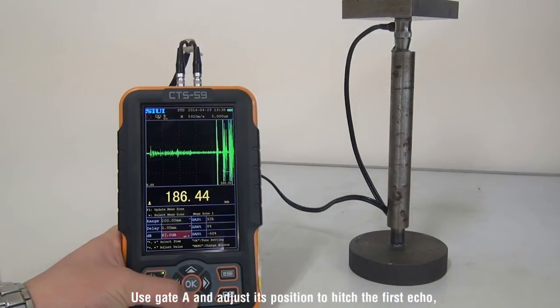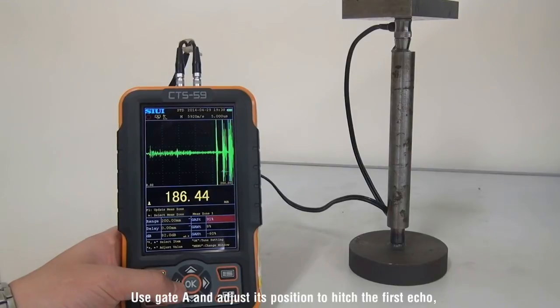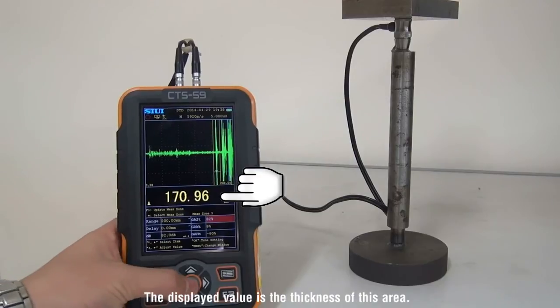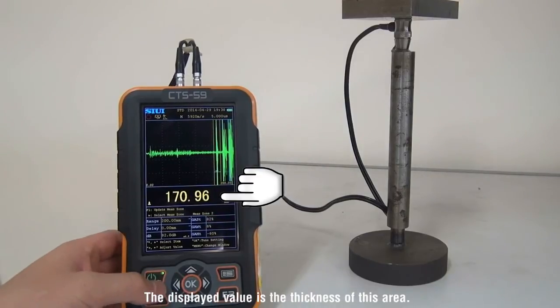Use Gate A and adjust its position to hit the first echo. Click F1 key to refresh the value of this area. The displayed value is the thickness of this area.